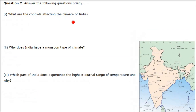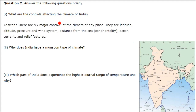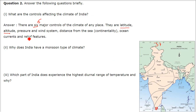Answer the following questions briefly. What are the controls affecting the climate of India? There are six major controls of the climate of any place. They are: latitude — that means the parallel lines — and India is between 37 degrees and 8 degrees latitude. Then altitude, and atmospheric pressure and wind system.